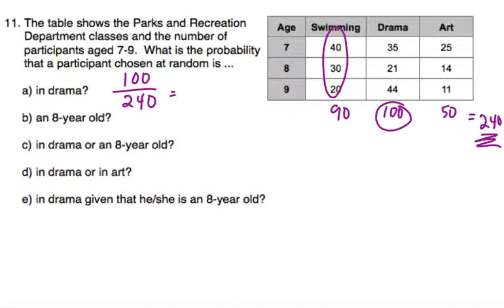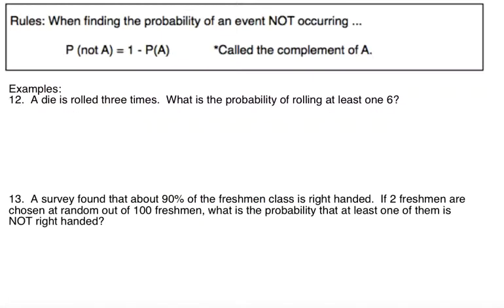One more — the last thing is the probability of an event not occurring. The easiest way to define this is to use the complement and do one minus the probability. Because probability of something happening is at most one — that would be a 100% chance. So take the total number of everything that could happen, that's your one, and subtract what you don't want to occur, and you'll end up with the probability of something not occurring.